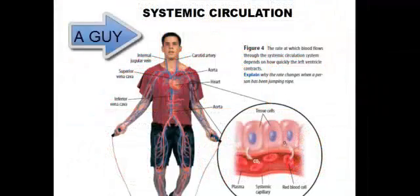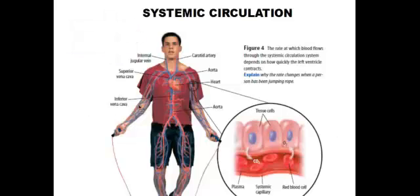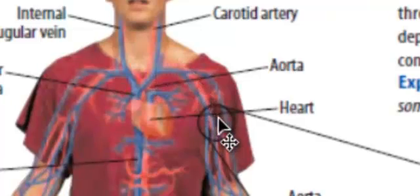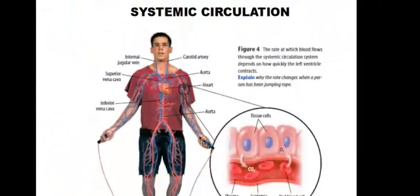So here we have a guy doing some jump roping, trying to stay in shape. And what's happening is this: the oxygen-rich blood is being sent out through the arteries, which are symbolized in red here. And as they travel through the arteries and eventually get into the capillaries, here we have our red blood cells that we talked about in the last vodcast.